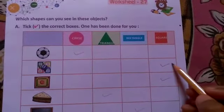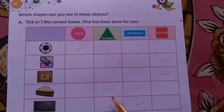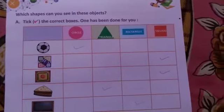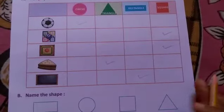Second is square, so we will tick the square. Third is square, so we will tick the square. Fourth is triangle, so we will tick the triangle. And fifth is rectangle, so we will tick the rectangle. Okay?